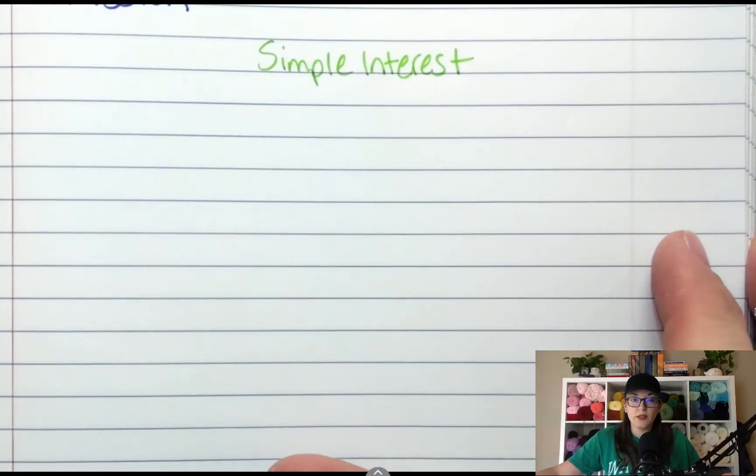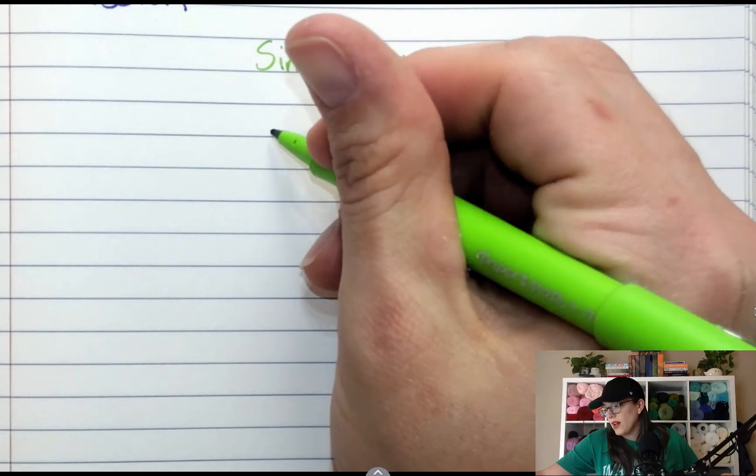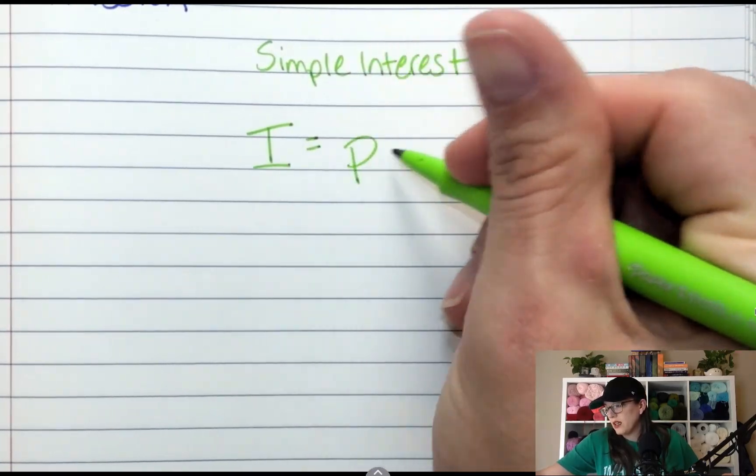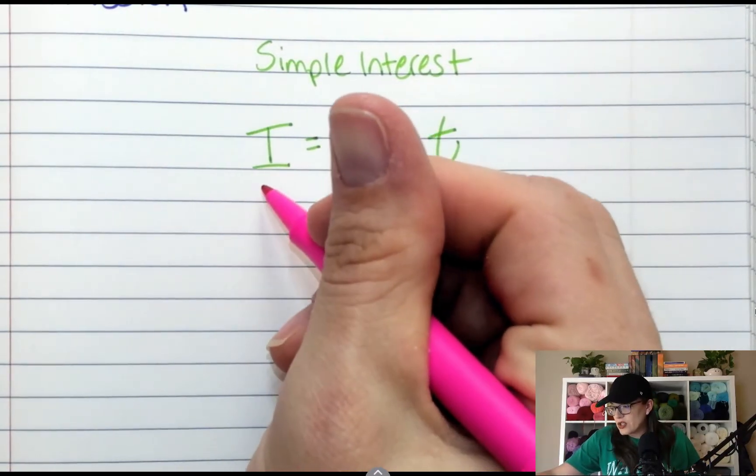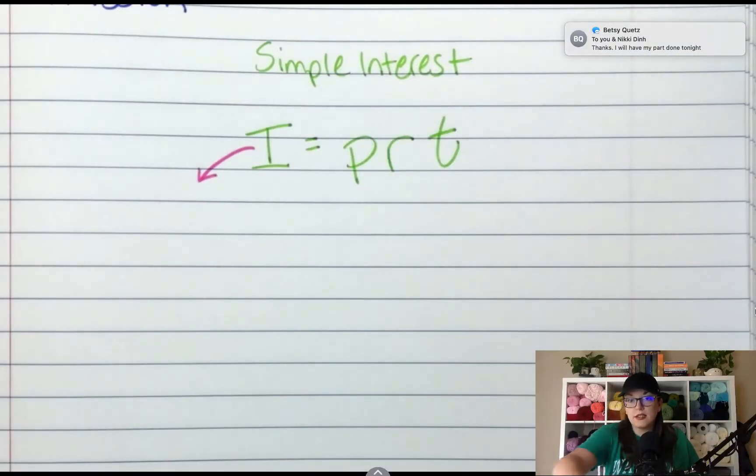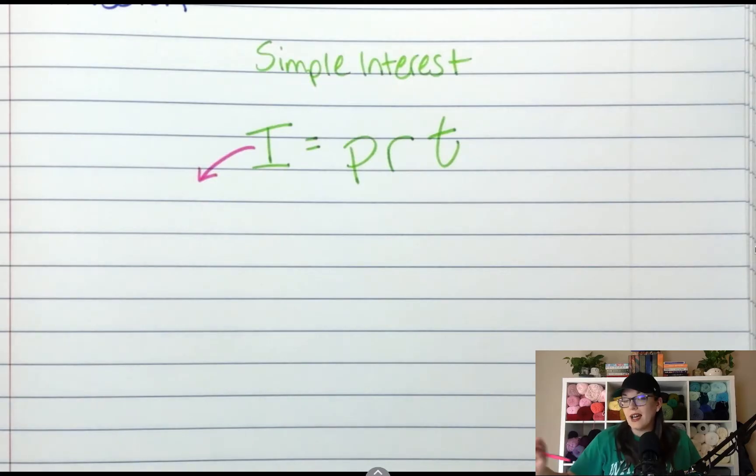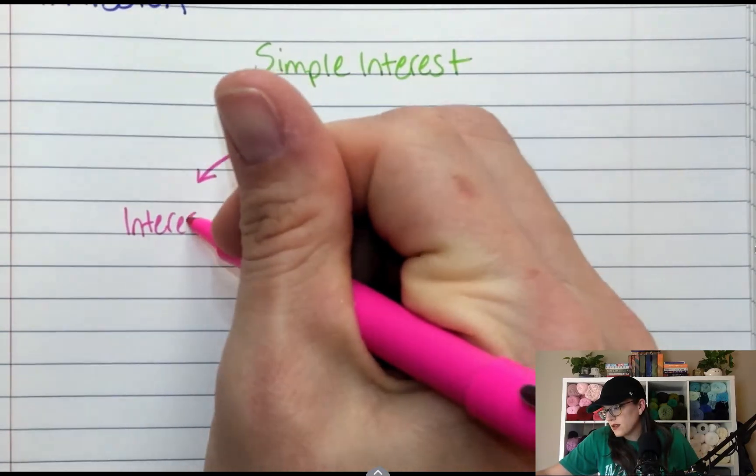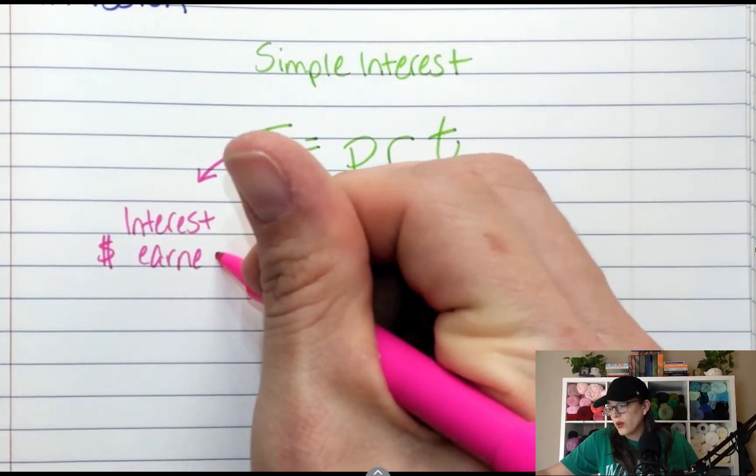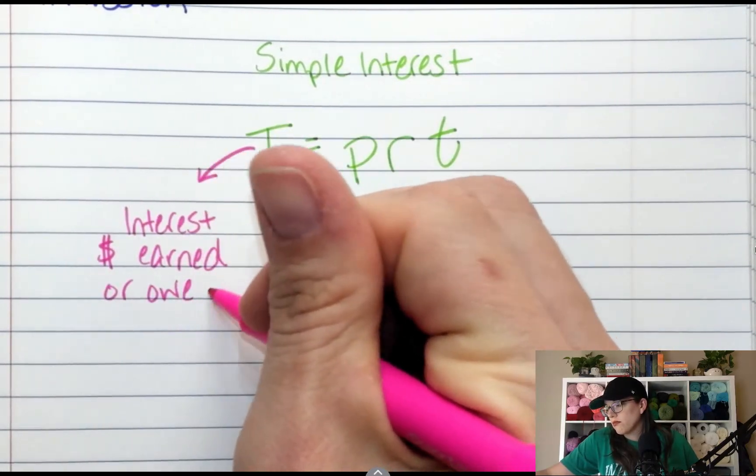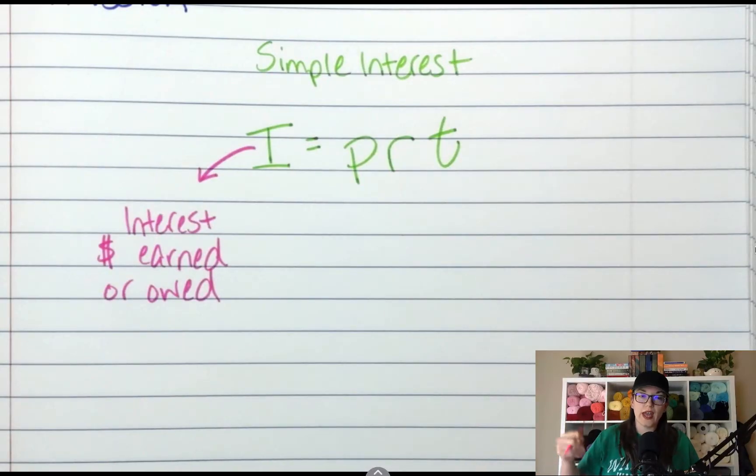So simple interest. You do not have to memorize this formula. It will be on your formula sheet, but it's also an easy one. You have I equals PRT. When I was growing up, we called it the PERT formula. So I is interest. This is how much interest is earned or owed. If you are the one lending money, then you get extra interest. If you borrowed money, you pay extra interest. And that's where I is.